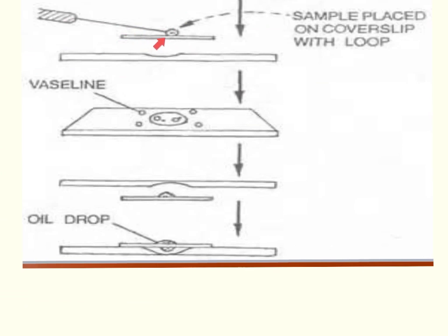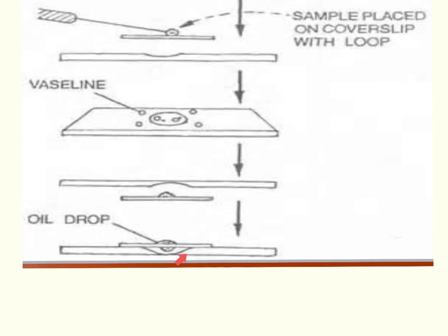Using our flame loop, we will place a sample of our bacteria in the center of our slide. Next, we want to take our concave slide and place it on top of our cover slide, so that when we flip the slide over, we will have our drop hanging from our cover slide down into that concave area.